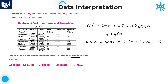Adding all clerk values: unit's place is 0, 10's place is 5, 100's place: 5 plus 3 is 8, 8 plus 6 is 14 with 1 carry; thousand's place: 3 plus 9 is 12, 12 plus 6 is 18, 18 plus 7 is 25 with 2 carry; then 2 plus 2 is 4, followed by 7, 9, 10. Total clerks is 1,05,450.